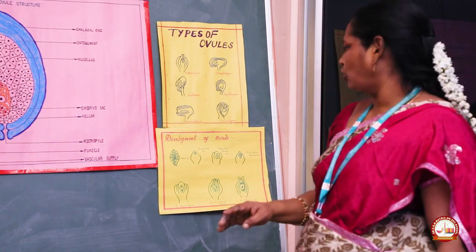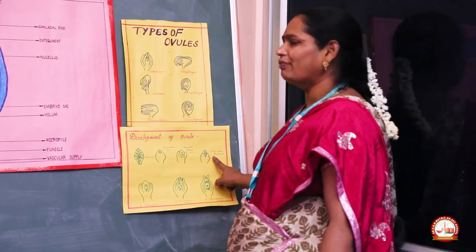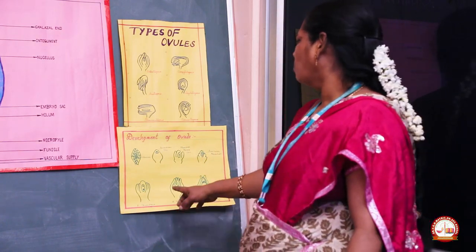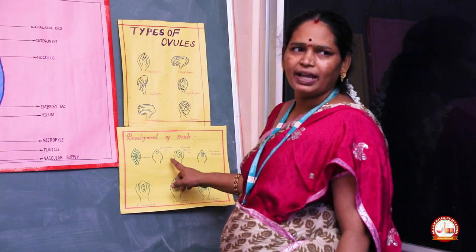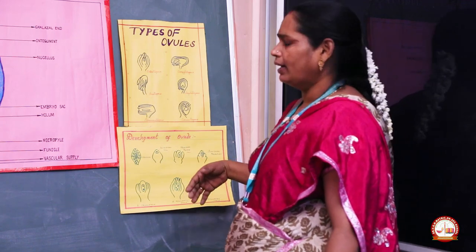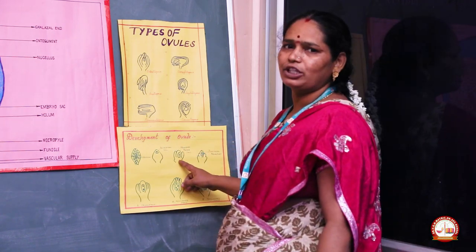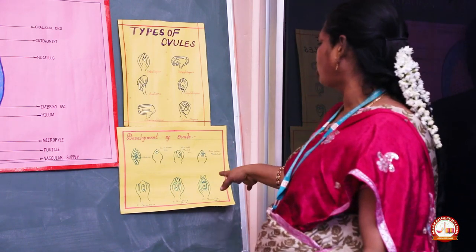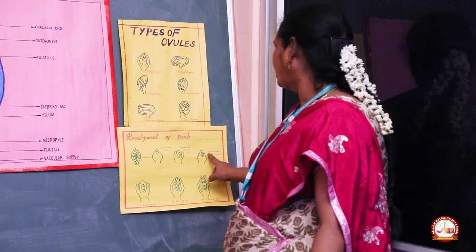Normally, four megaspores will be formed, and only one will be functional. If one is functional, we call it monosporic development of the ovule. If two megaspores function as an embryo, we call it bisporic development. And if four megaspore cells are involved in the development of the embryo, we call that tetrasporic development.